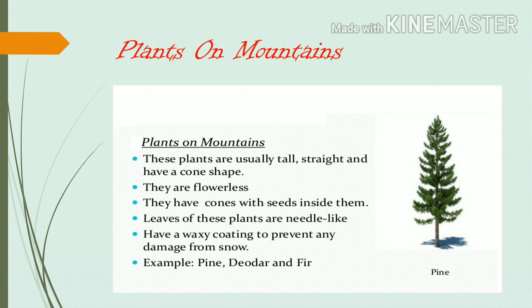Plants on mountains. Mountains are highly raised areas of land and are generally colder than plains. Examples include pine, fir, and deodar. These trees are flowerless; instead, they bear cones with seeds. Their adaptations include: they are usually tall, straight, and have a cone shape; they are flowerless; they have cones with seeds inside them; and their leaves are needle-like with a waxy coating to prevent damage from snow.